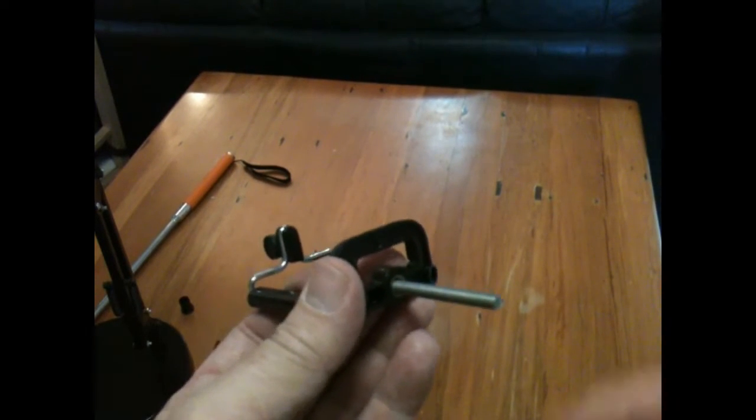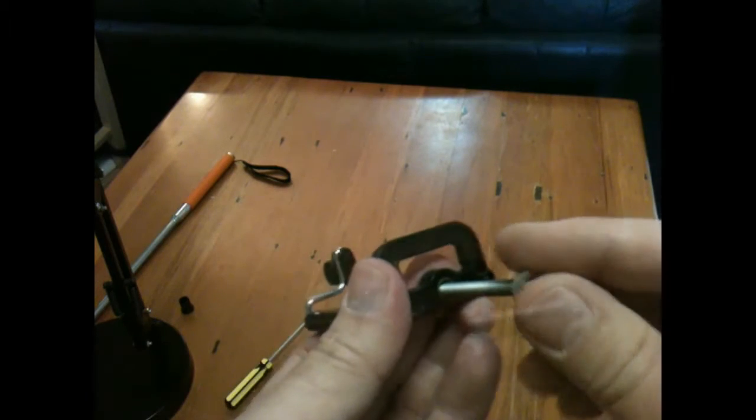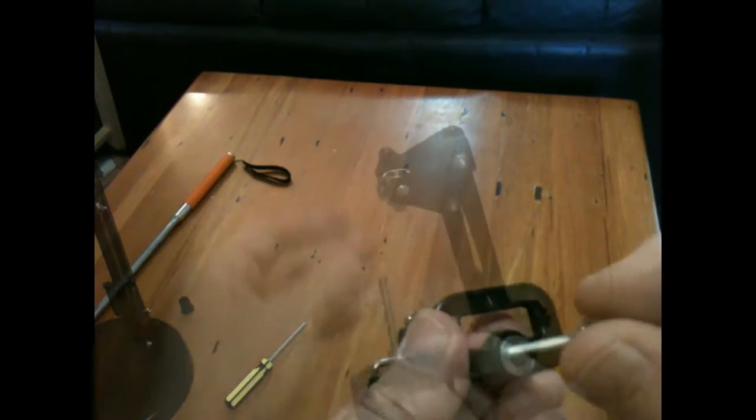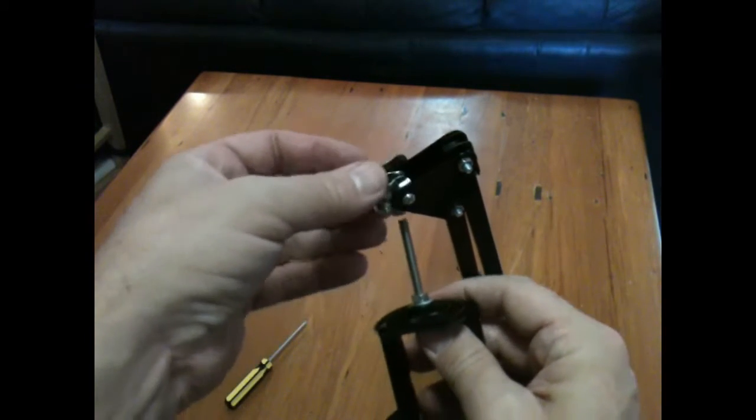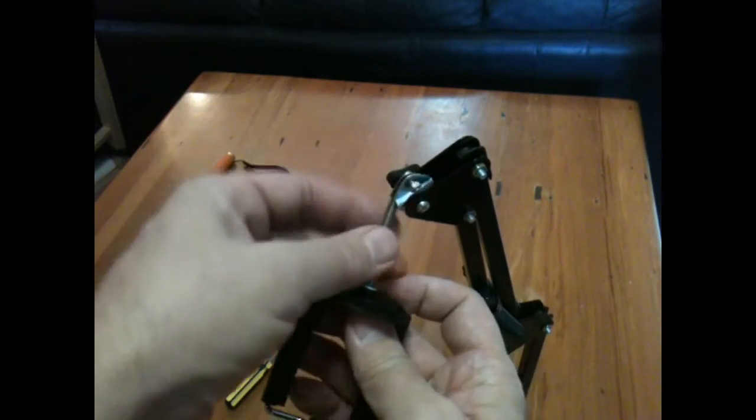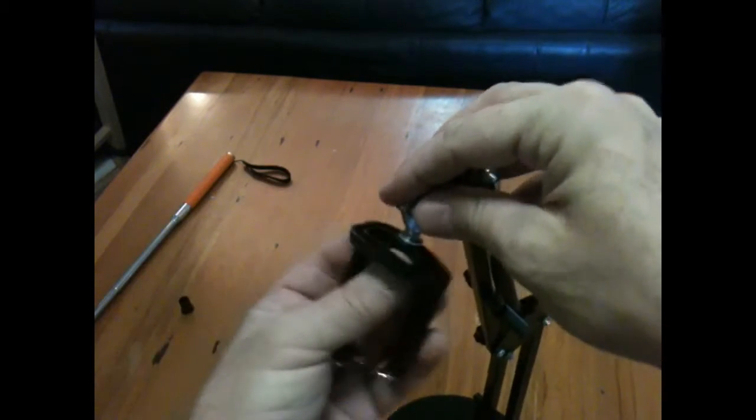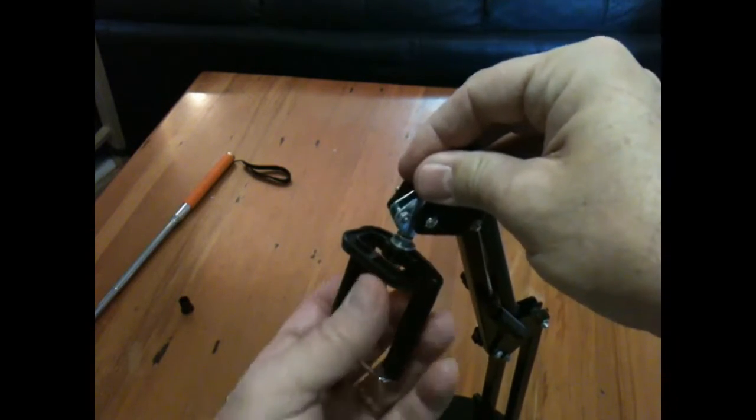Now you can either mount the phone holder hanging down or sticking up from the top of the jib. I am mounting the holder sticking up on the top of the jib for now as I can change it later as needed.